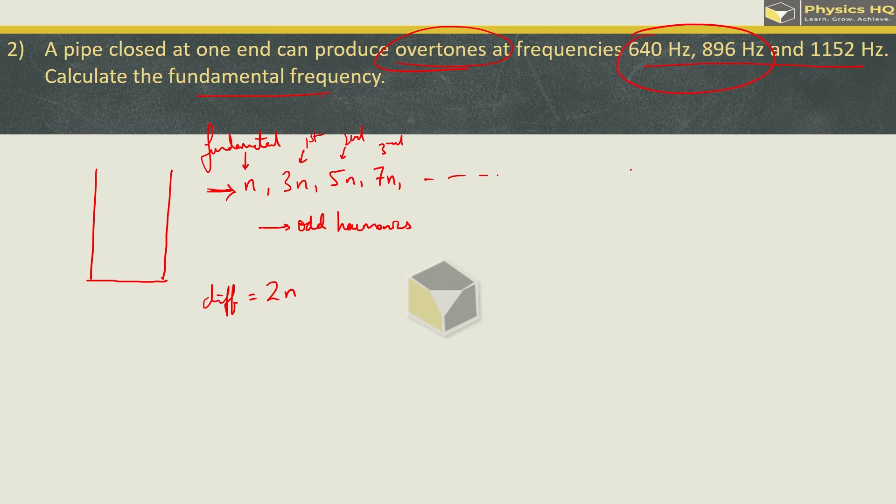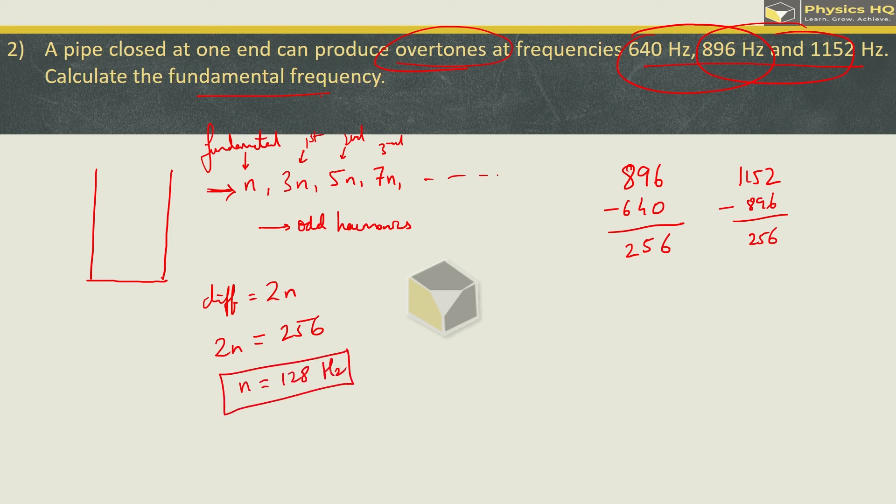What we observe is that difference between two overtones is equal to twice the fundamental frequency. So if we take 896 minus 640, it gives us 256. Similarly, 1152 minus 896 will also give 256. Therefore, the difference between the overtones that we are getting is 256 which is twice the fundamental frequency. So the fundamental frequency in this case will be 128 Hz. I hope you have understood. Let us check out the next sum.